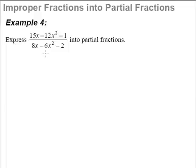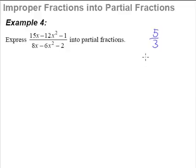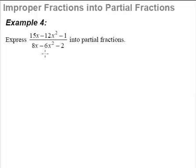The first thing that we do when we deal with an improper fraction is to make it proper. How are we going to change an improper fraction into a proper one? Well, we do the same way as what we do for, let's say, 5 over 3. How do we change 5 over 3 into a proper fraction? Well, 5 over 3 is simply 1 and 2 thirds. So this is precisely what we are going to do, except that now it is in polynomials. So we shall put in example 4.